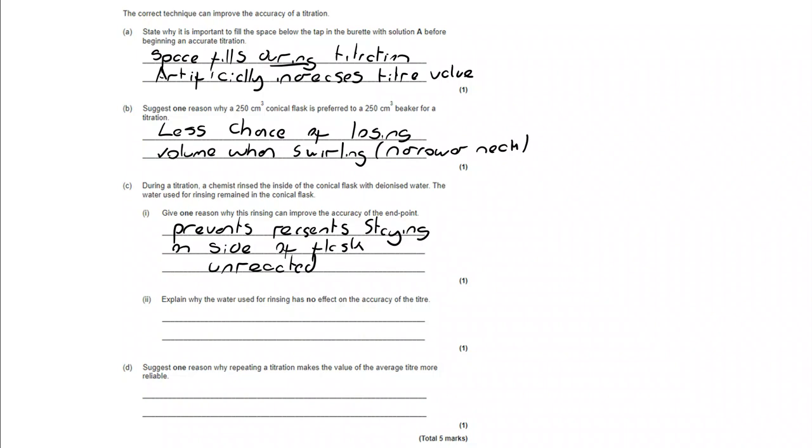So by adding water, by swirling it with deionized water, rinsing it with deionized, we're making sure that those little bits of reagent on the side are not left unreacted. They move down to the bottom of the conical flask.